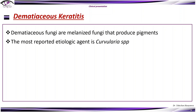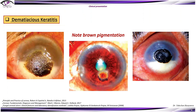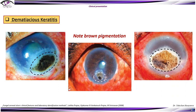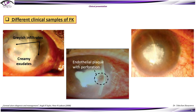Dematiacious keratitis: these are melanized fungi that produce pigments, and the most reported etiologic agent is Curvularia. Clinical features include ulcers with whitish to white-yellowish corneal pitting, corneal edema and infiltration in the peripheral part of the ulcer, immune ring, hypopyon, iritis, and endophthalmitis. Clinical samples show brown pigmentation on the surface of the ulcer, grayish infiltrates with creamy exudates, endothelial plaque with iris perforation, iris prolapse, and irregular feathery margins with dry texture.